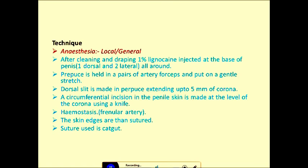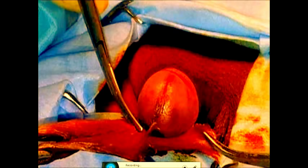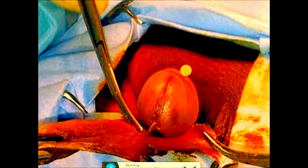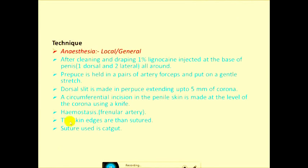After cleaning and draping, lignocaine is injected at the base of the penis — one dorsally and two laterally, all around. The prepuce is then held with Rampley's (RT) forceps and put on gentle traction.